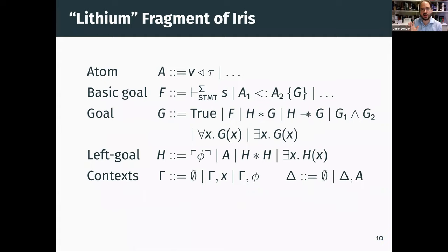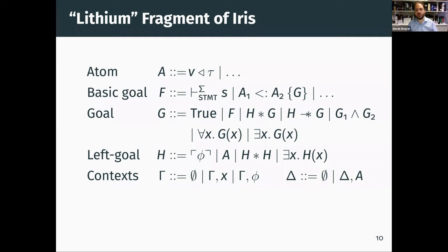Here's the syntax. The key is that the goals are restricted. The left-hand side of a separating conjunction and the antecedent of the magic wand have to be what we call left goals, which have a more restricted syntax. For example, left goals don't include any magic wands or universal quantifiers. By restricting in this way, we can develop a very straightforward goal-directed proof search which doesn't require any backtracking. There are also no disjunctions in either the goals or the left goals.